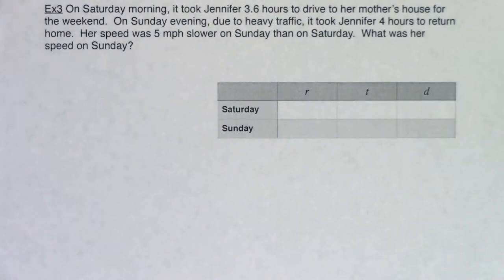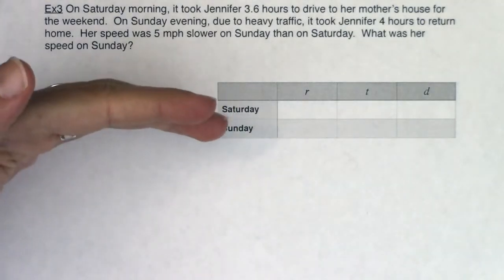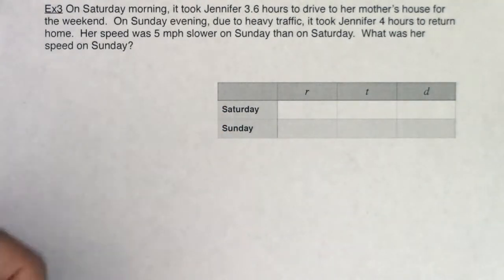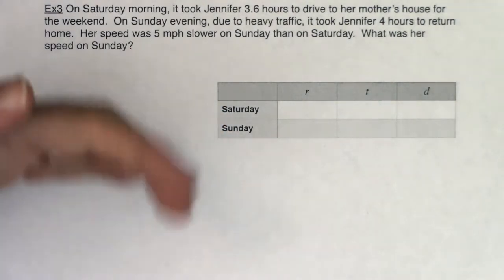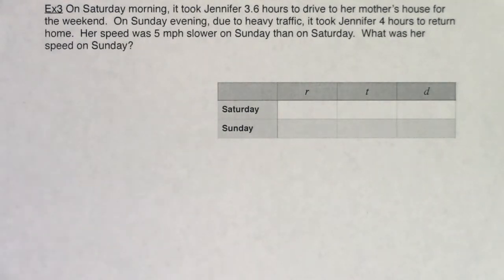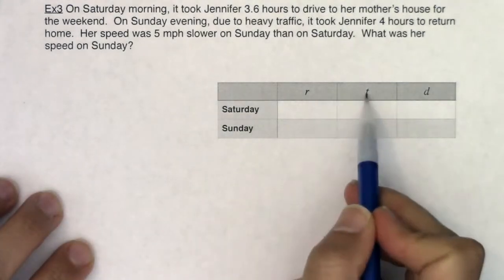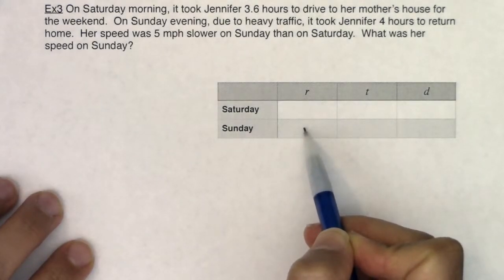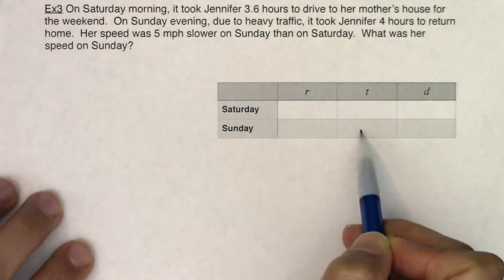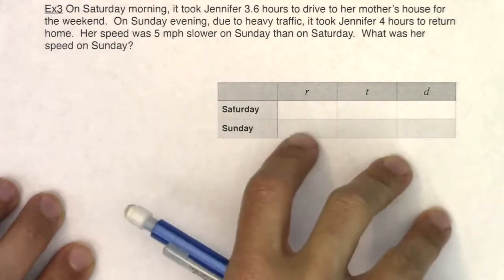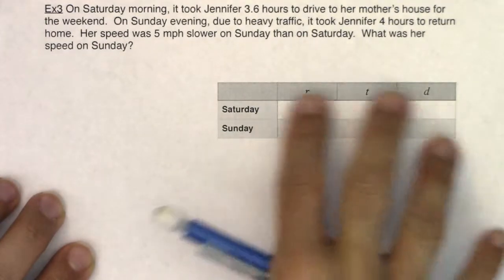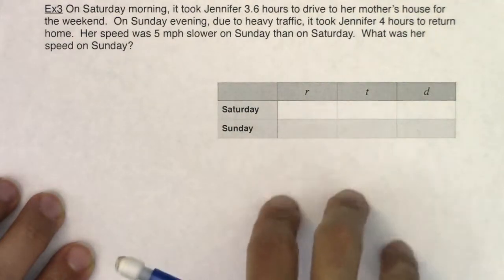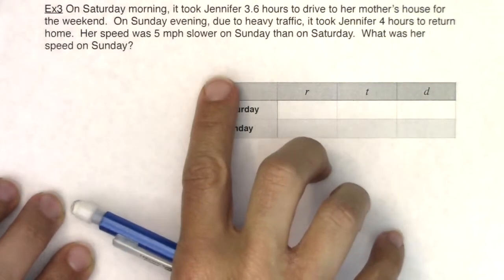Imagine you're in a car going to your mom's house — it takes 3.6 hours to drive over there, but on the way back you hit traffic and you're going slower. In terms of variables, there are a lot: your rate on Saturday, your time on Saturday, your distance on Saturday, and then the rate, time, and distance on Sunday. That's six variables. We'll fill some in with numbers and leave others as symbols. Let's look at what they're asking: what was her speed on Sunday?